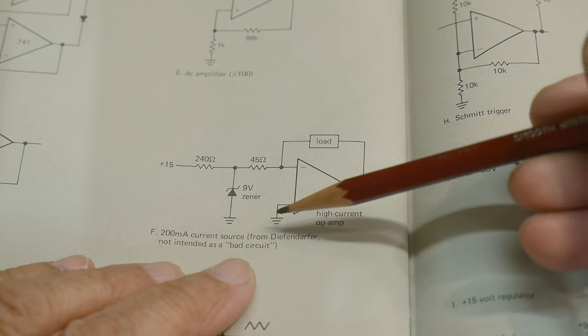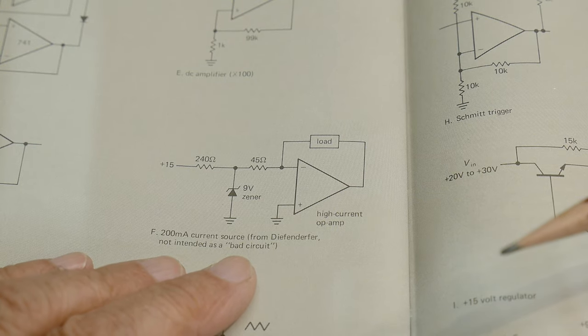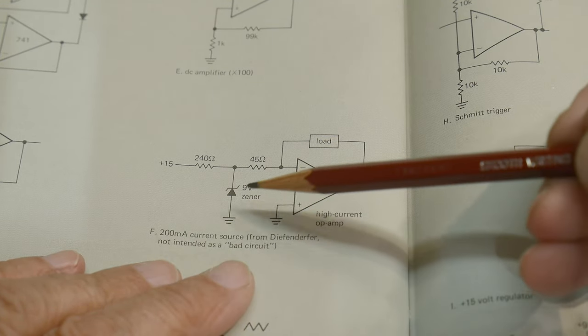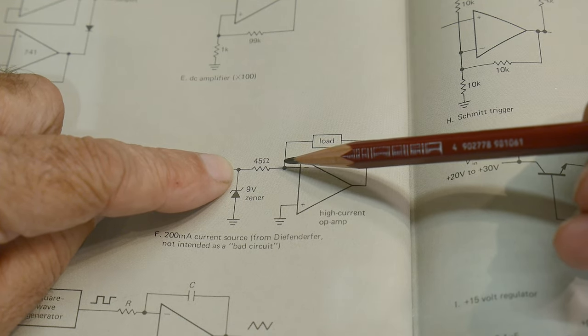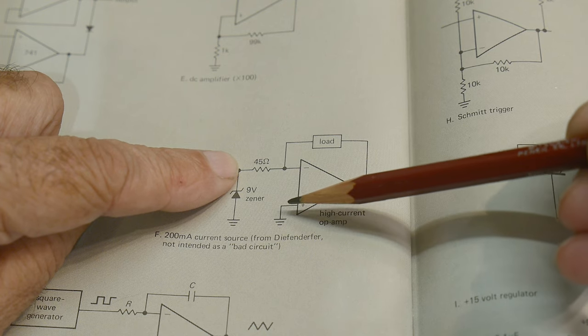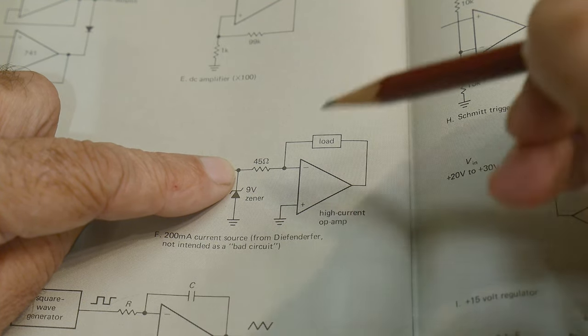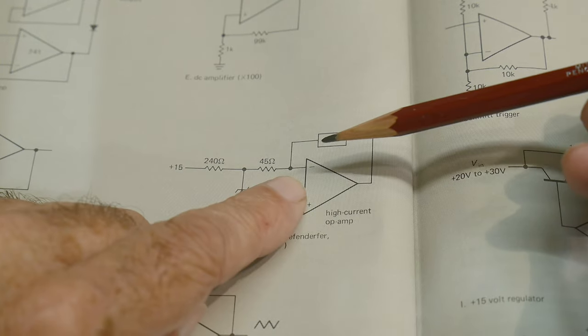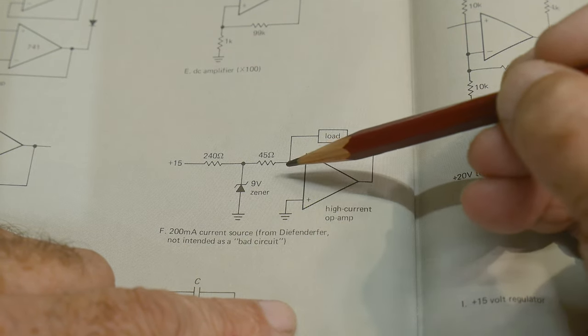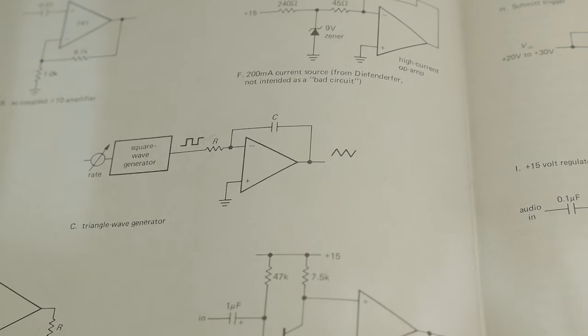Alright. 200 milliamp current source from Defendererfer, not intended as a bad circuit, not intended. So they use somebody's design, then they call it a bad circuit. I don't know. That's pretty bad. Okay. So we have plus 15 coming in, nine volts Zener. So now we have nine volts here. We have nine volts coming in and this will act like a kind of a trans impedance amplifier. Nine volts here, ground here. That means we'll have ground here. So we'll have high current op amps. The load will be here. Yeah, that's not going to work because there's no return. The input of an op amp is high impedance. So it might be hard to drive this thing correctly. So anyway, that's what I'm going with guys. Tell me how, tell me how stupid I am.